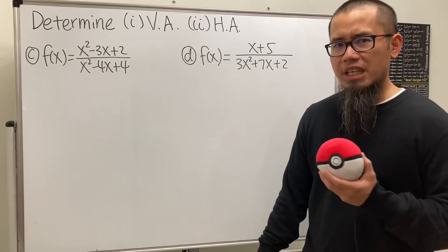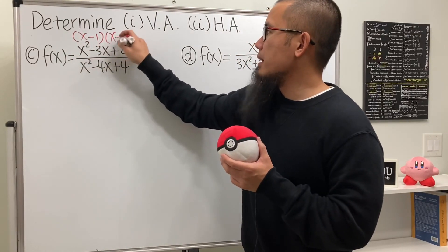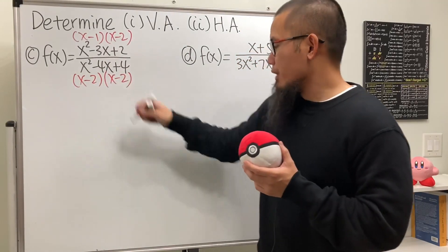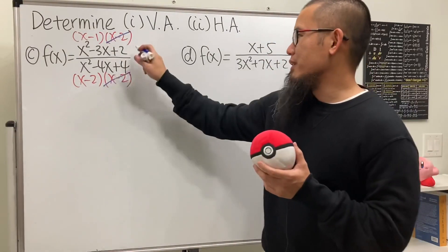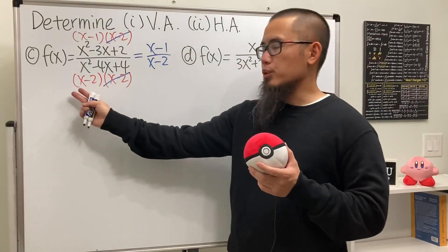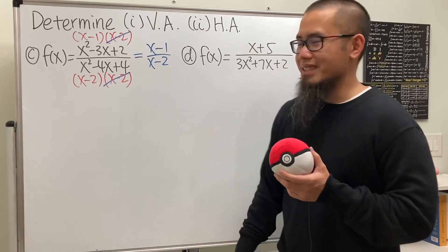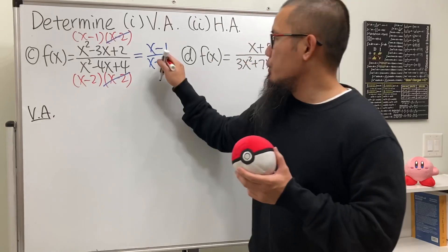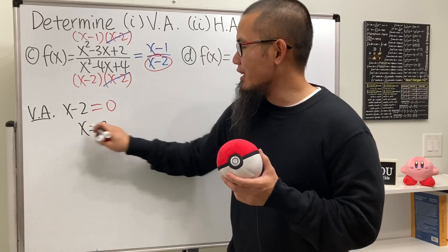For part (c), we can factor and cancel. The numerator factors as (x − 1)(x − 2) and the denominator as (x − 2)(x − 2). The (x − 2) cancels, leaving (x − 1)/(x − 2), but x cannot equal 2 — the other factor was cancelled but one remains. For the vertical asymptote, set x − 2 = 0, giving x = 2.